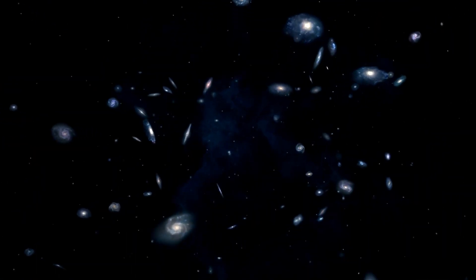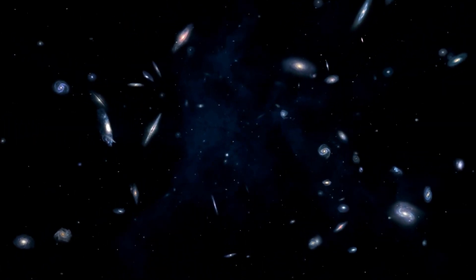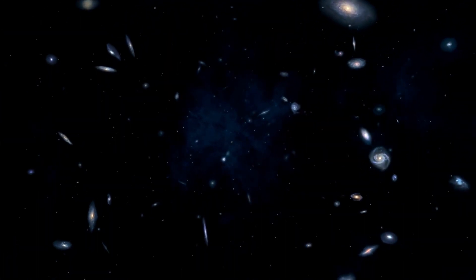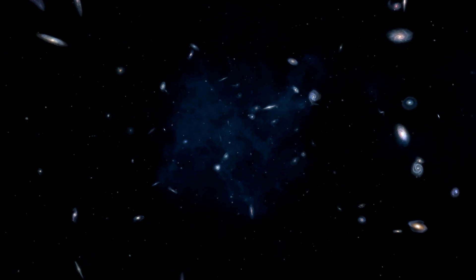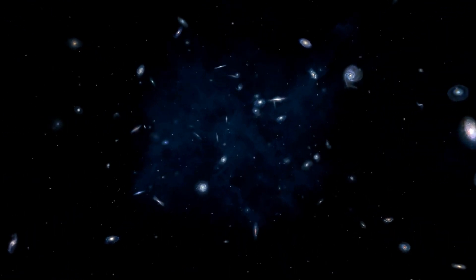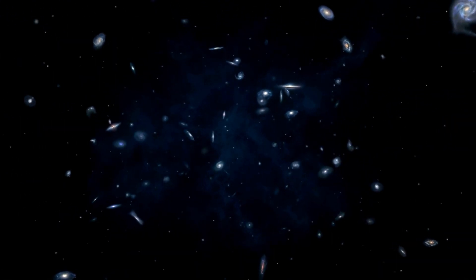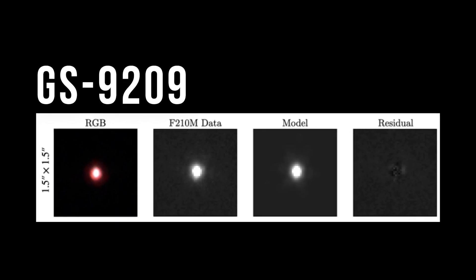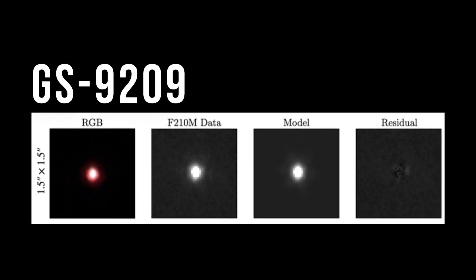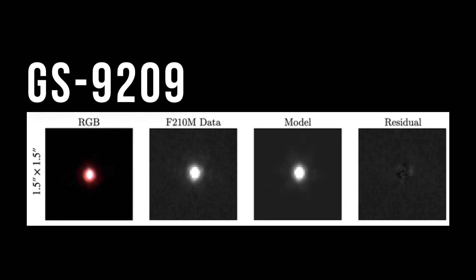Astronomers previously believed this to be the way most galaxies formed, but the idea fell out of favor, replaced by the notion that large galaxies form from the slow merging of many smaller ones. But now, thanks to GS9209, it's clear that monolithic collapse could be the way that this galaxy formed.